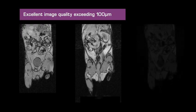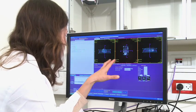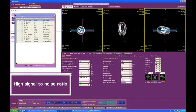The system features high spatial resolution and excellent image quality exceeding 100 microns. Up to four channel receiver enables high signal-to-noise ratio and support for array coil imaging.